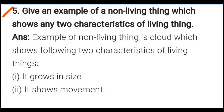Give an example of a non-living thing which shows any two characteristics of living things. Answer: the example of a non-living thing is a cloud. It shows two characteristics of living things: one — it grows in size; two — it shows movement.